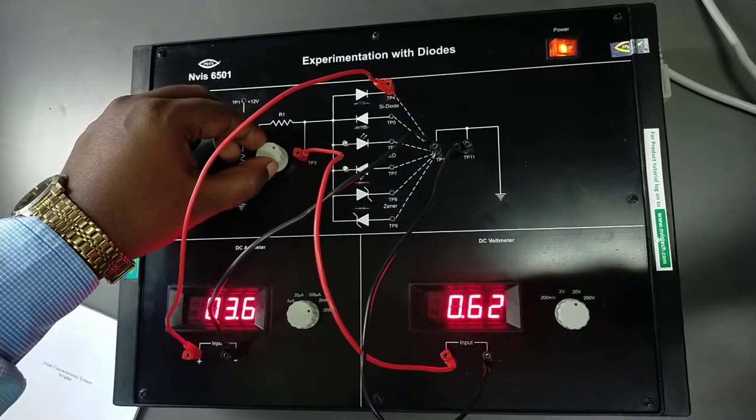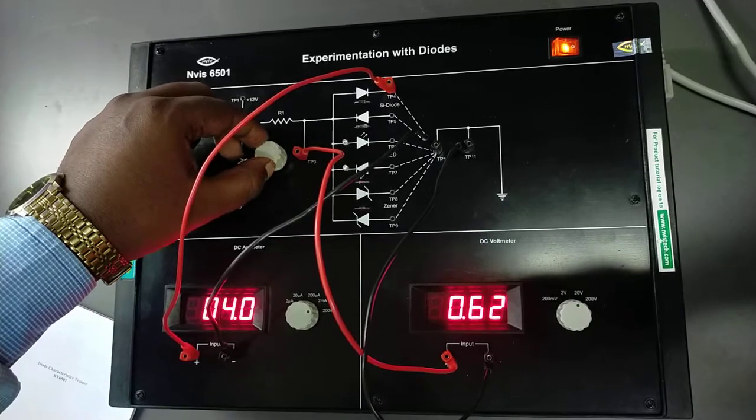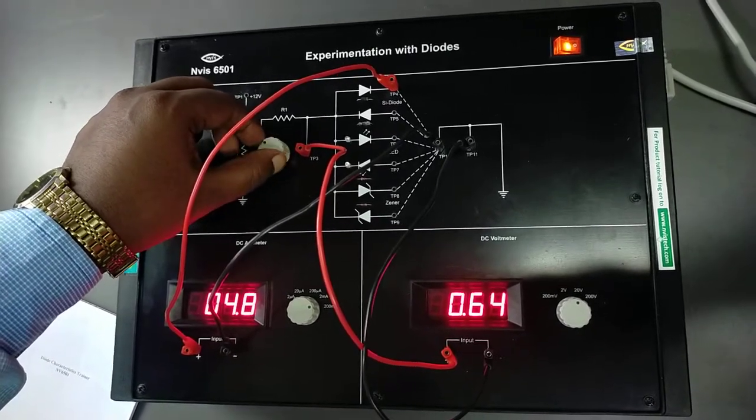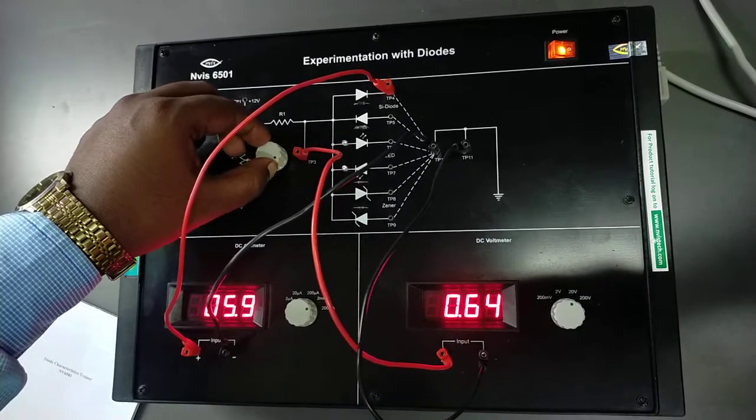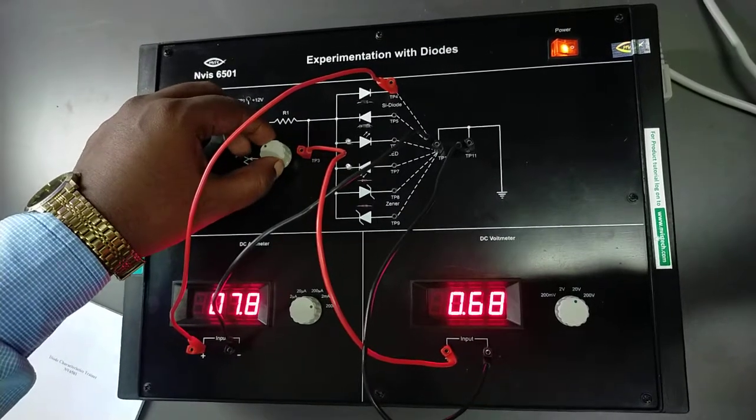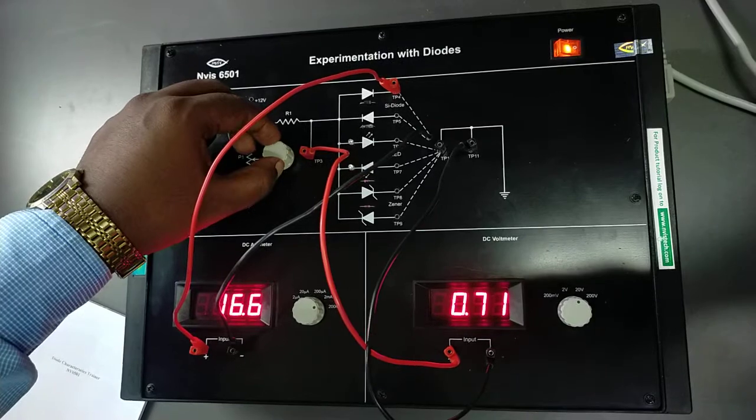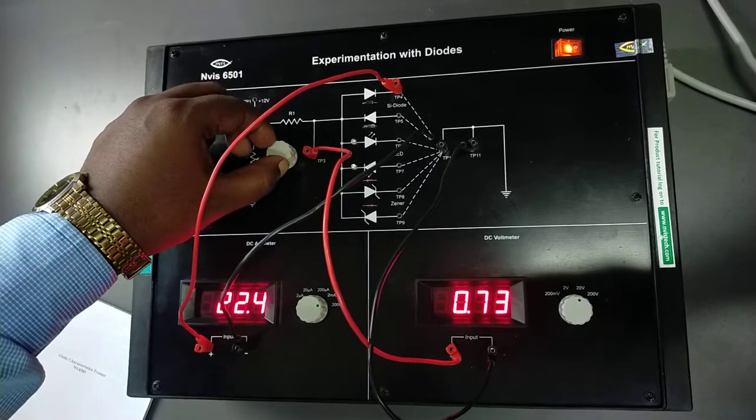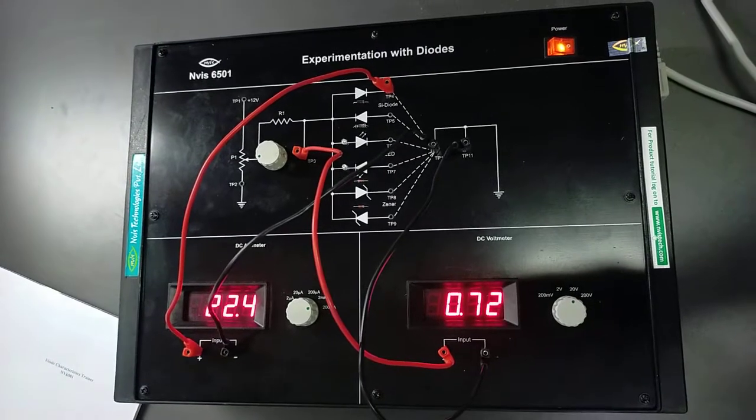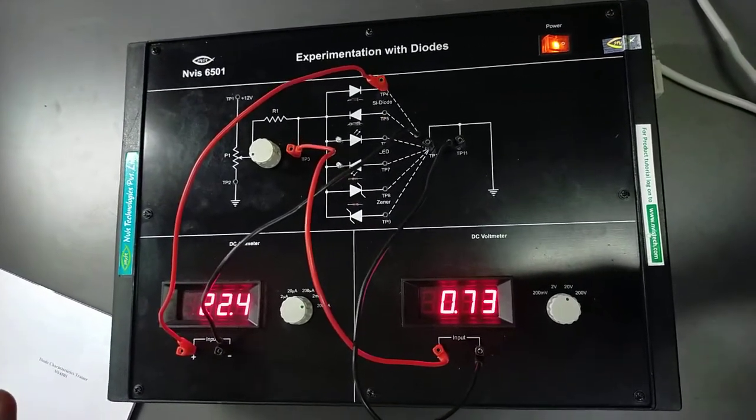So here we can see current is increasing rapidly. In this way, we have done the experiment of silicon diode in forward bias.